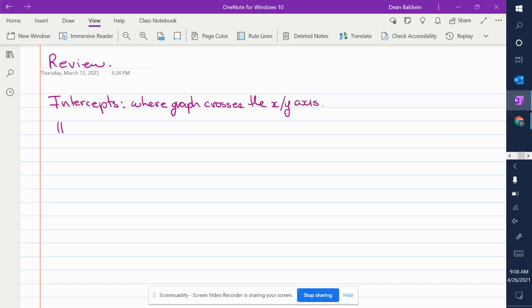How do you find them? The x-intercept is when y is equal to zero. The y-intercept is when x is equal to zero.